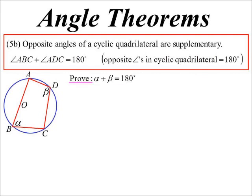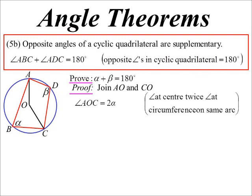To prove that one, what I'm going to do is join in two radii, A to O and C to O, and then use the theorem from yesterday. Angle AOC would end up being twice alpha, because the angle at the center will be twice the angle at the circumference.